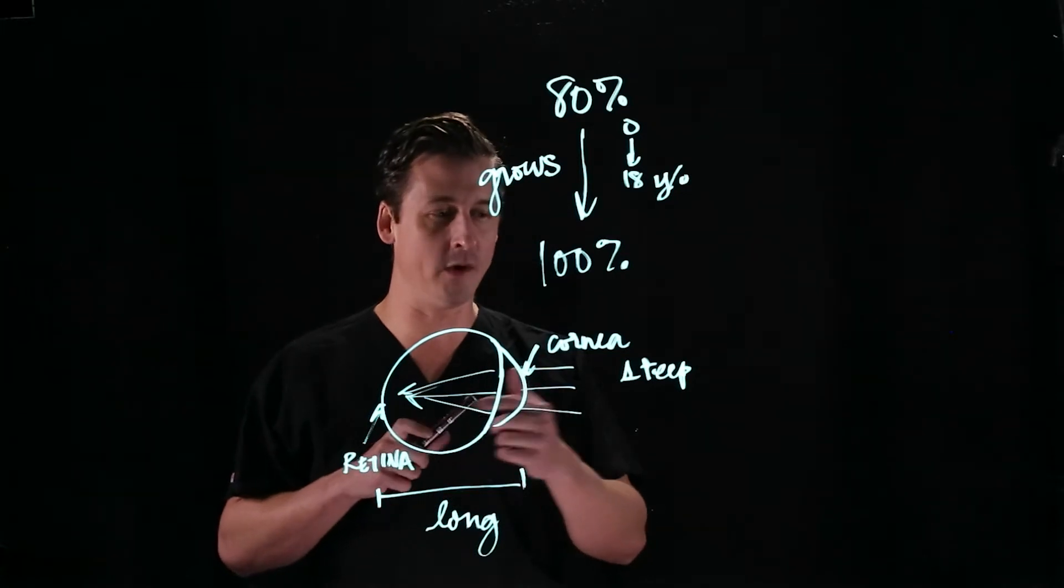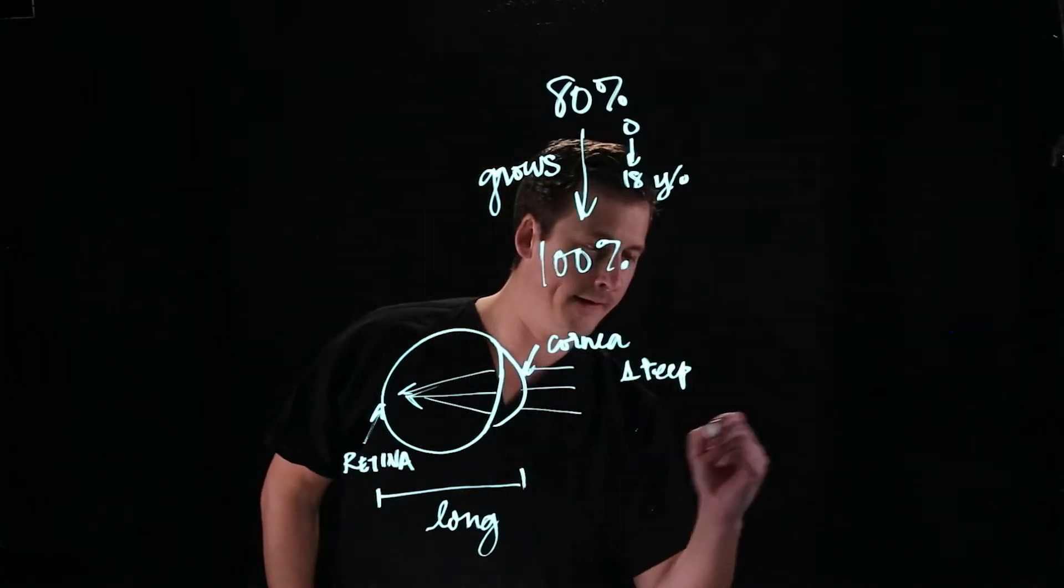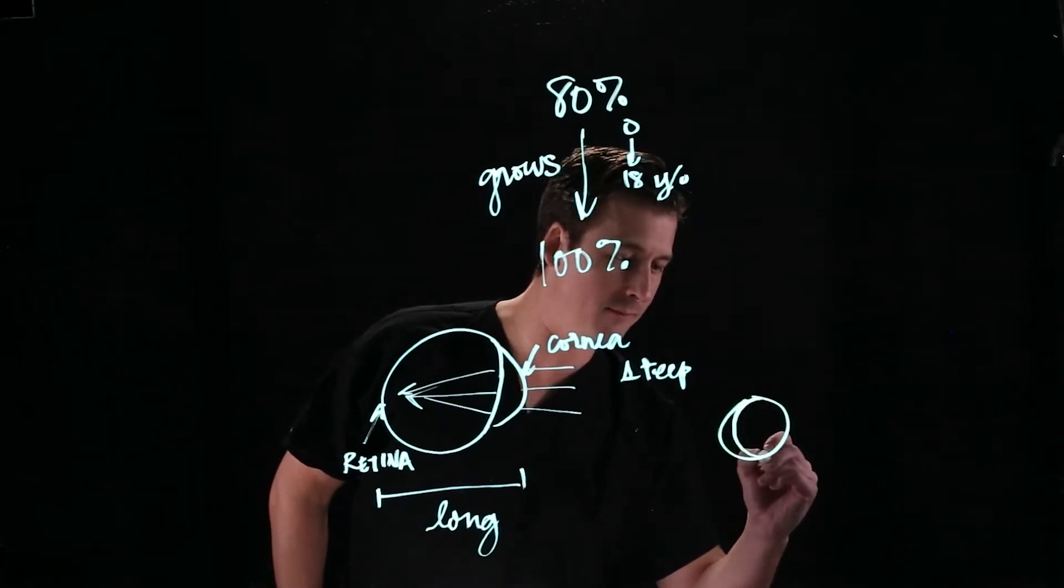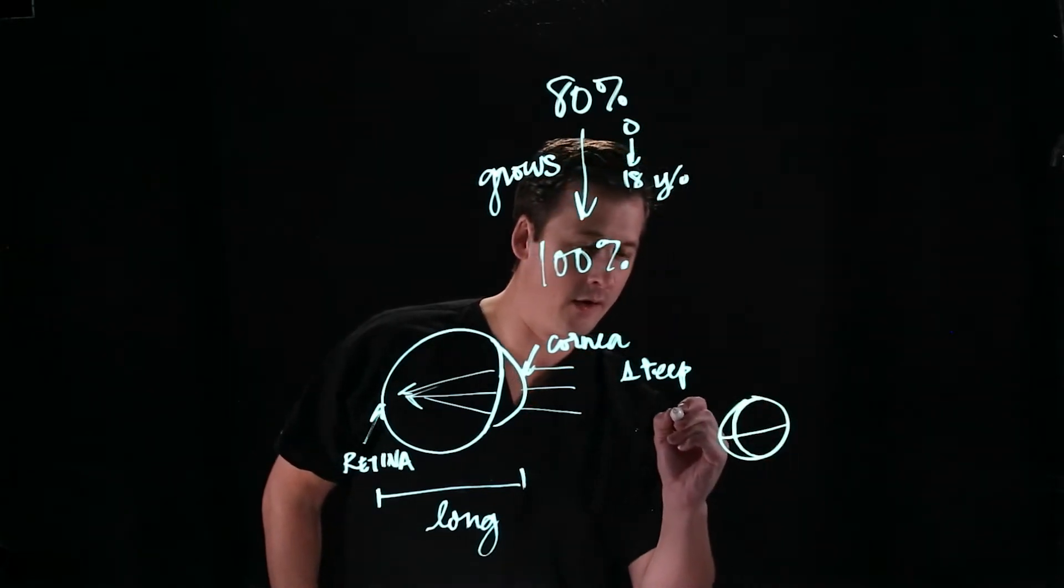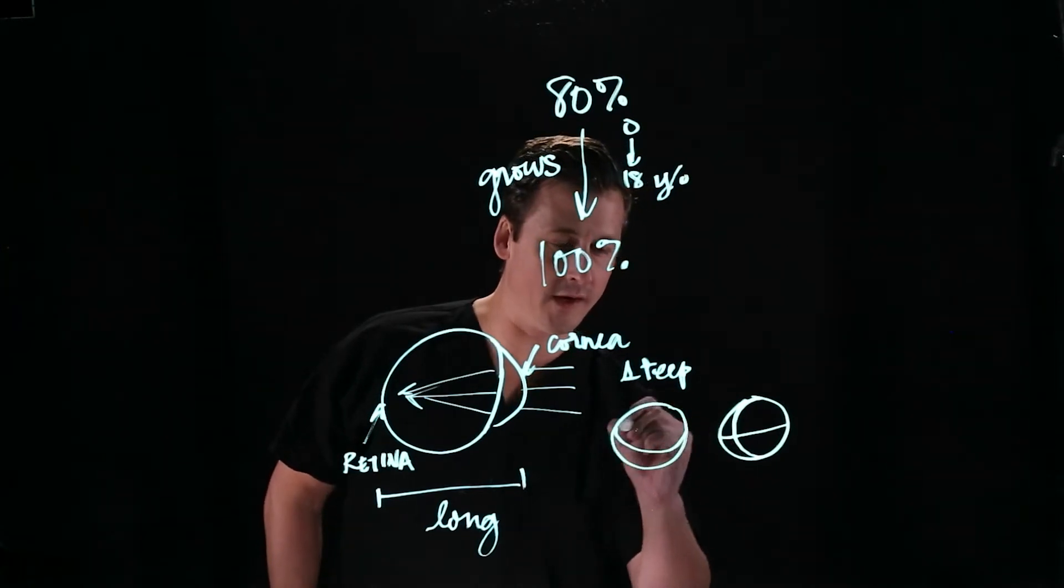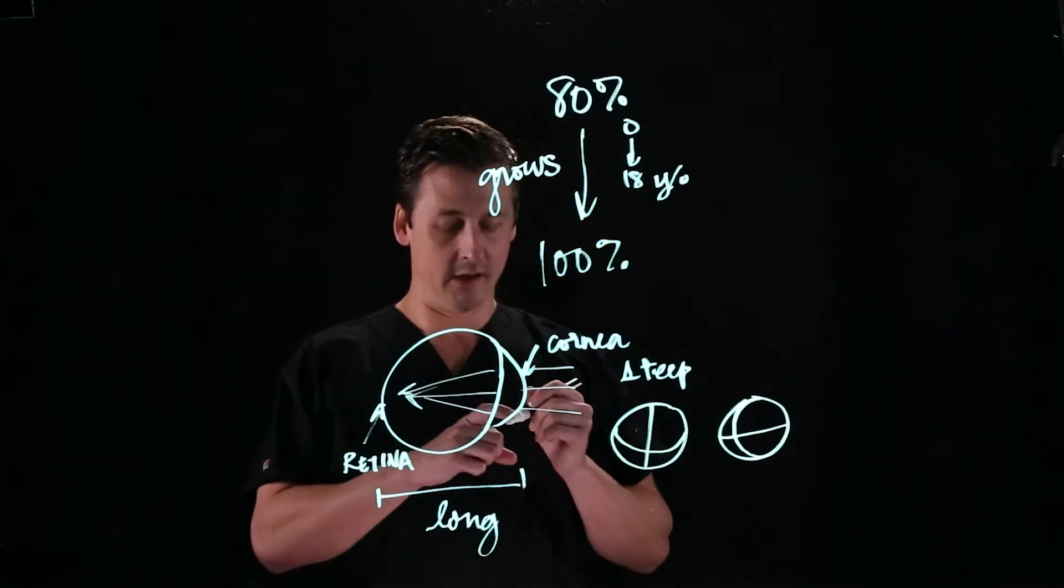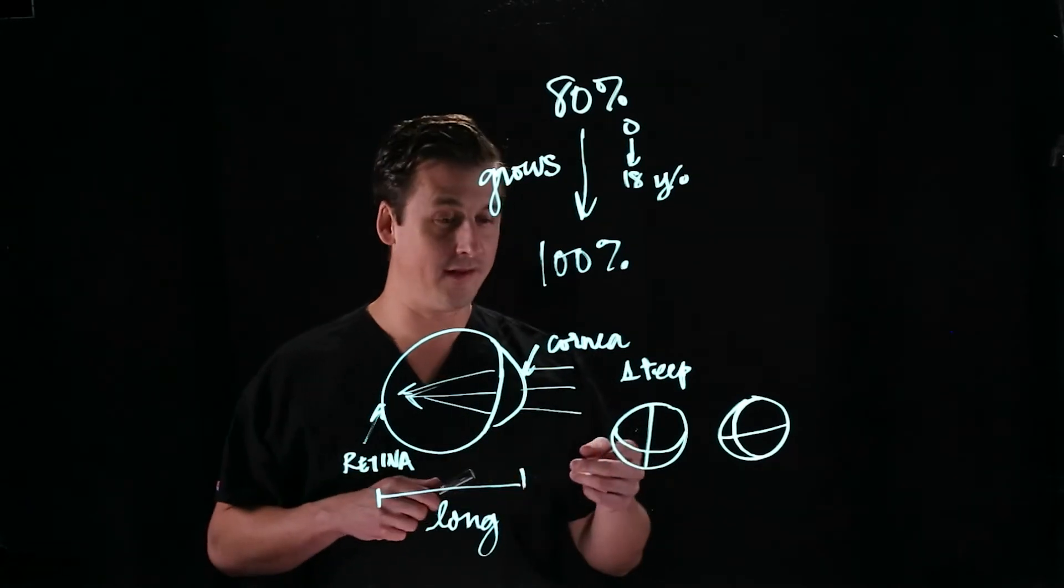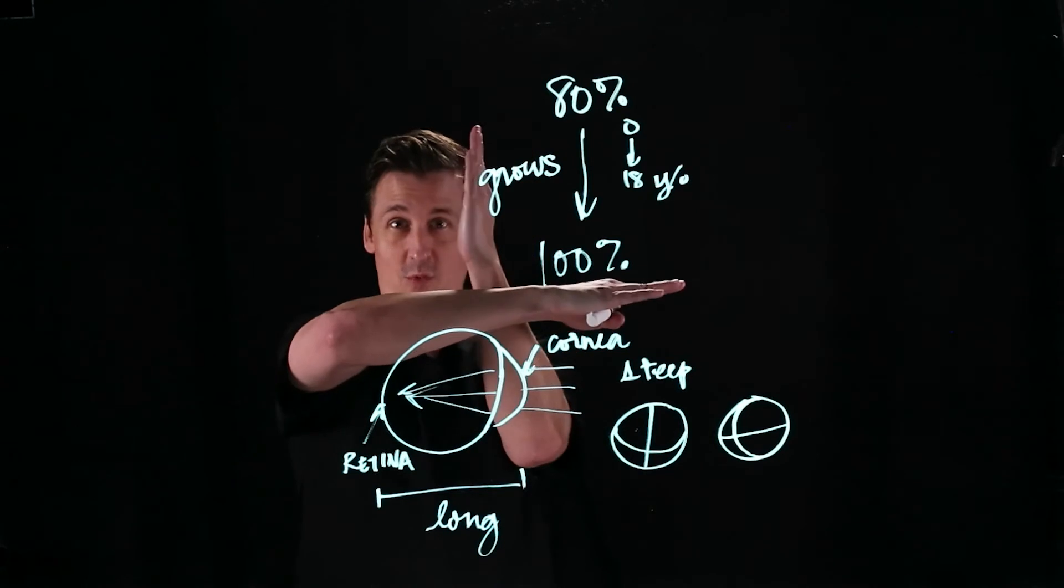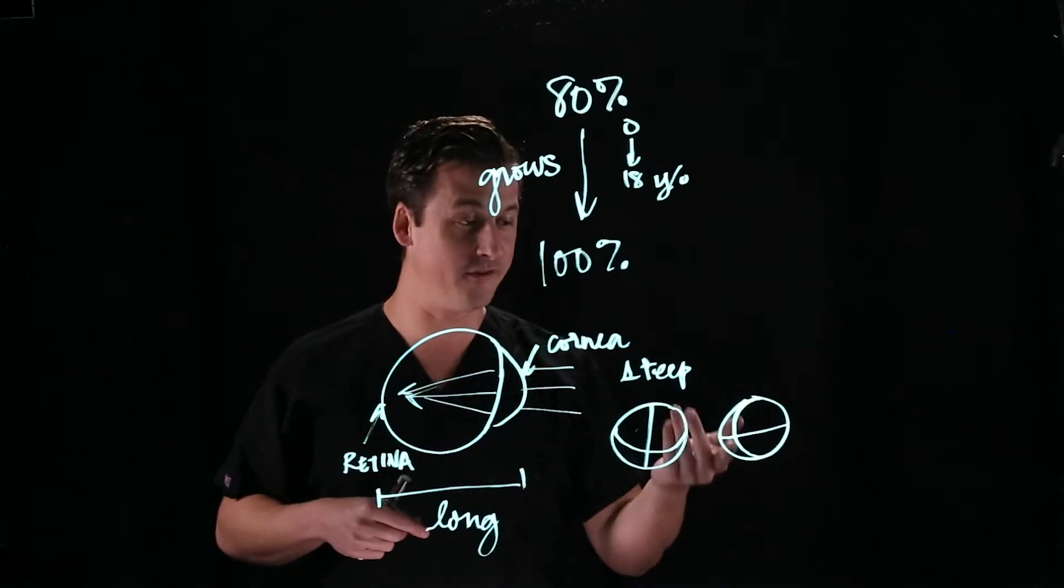And then when you add in the fact that the cornea can be steep in different directions, if we're looking at the cornea from the front, it can either be really steep this way and real flat this way, or you can draw the same cornea and have it be really steep this way and really flat this way. Those are two different types of corneas. They might have the same overall curve, but they're very, very different depending on which way you're looking at it. And that's called astigmatism.